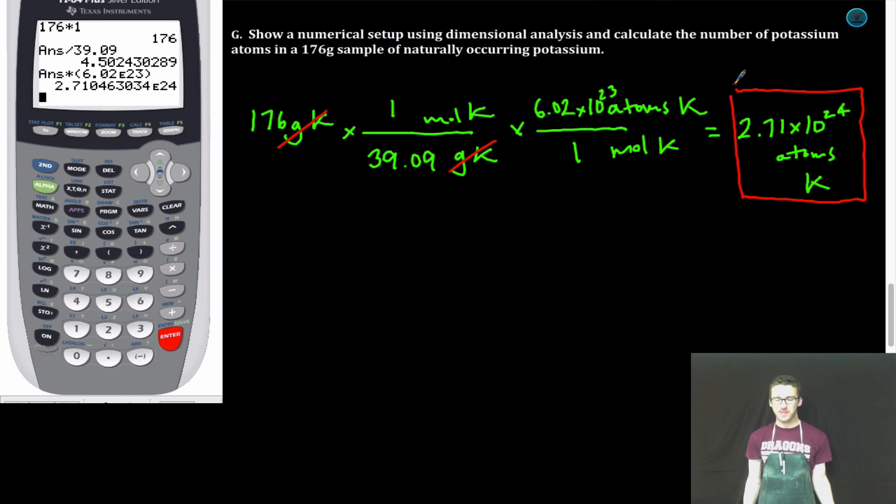Again, always stop and check to see if your answer makes sense. I expect a number that's larger than Avogadro's number because the mass that I originally started with is greater than the mass in grams of one mole of potassium. All right, that does it for this video. Have a fantastic day.